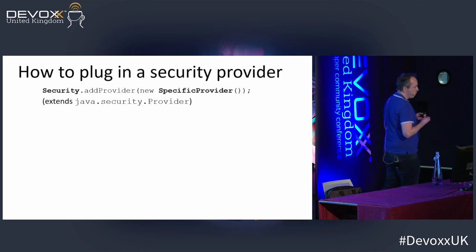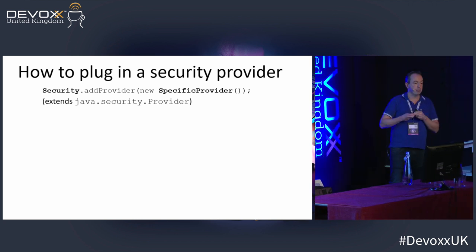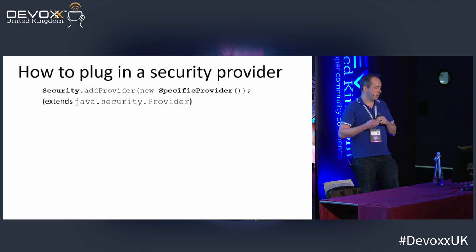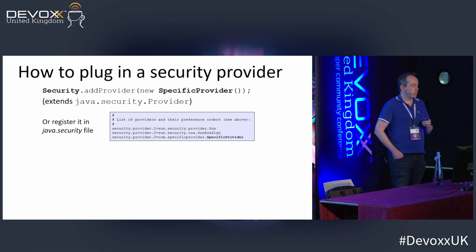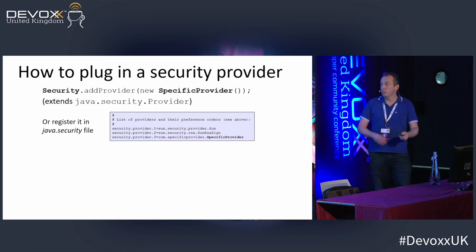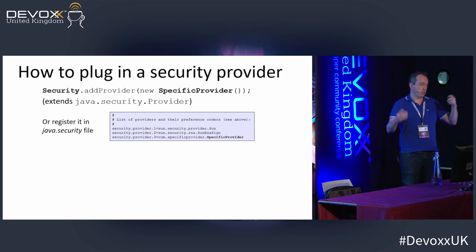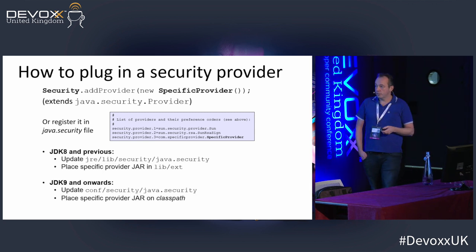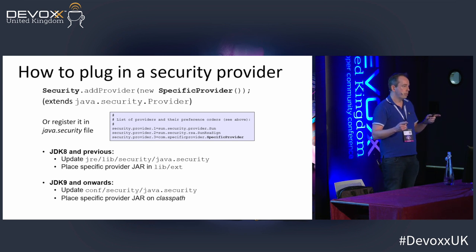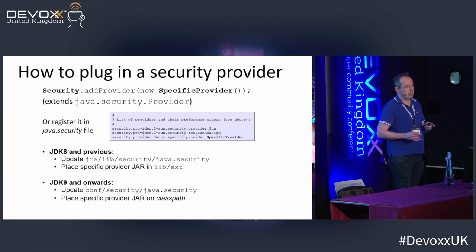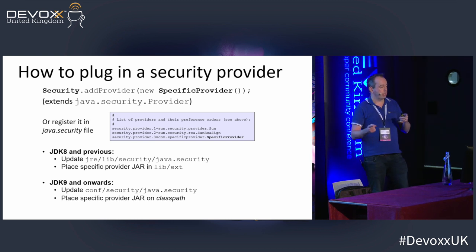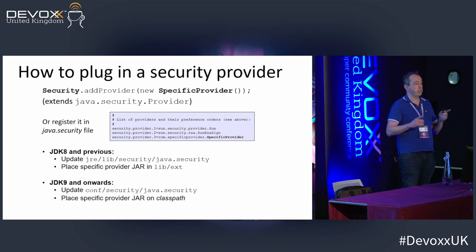To plug in a provider, there is a Security class in Java with a static method called addProvider, and you can use this to plug in your own security provider, which has to extend the abstract class Provider. You can also register it in the Java security file. Between Java 8 and JDK 9 onwards, the Java security file is in a different location. Also, the library extension mechanism from Java 8 has been removed in Java 9, so you have to put your security JAR on the classpath instead.